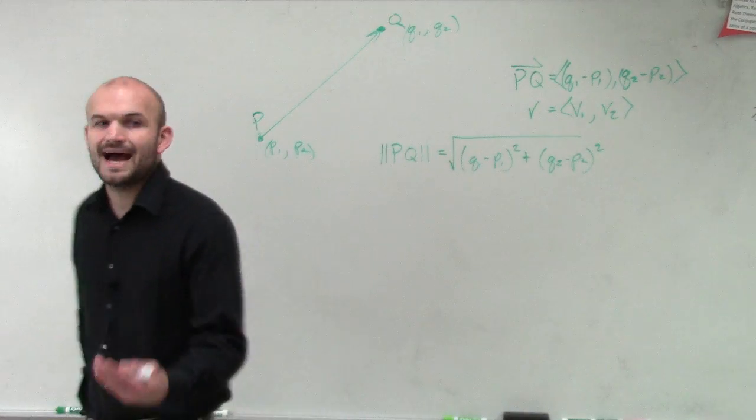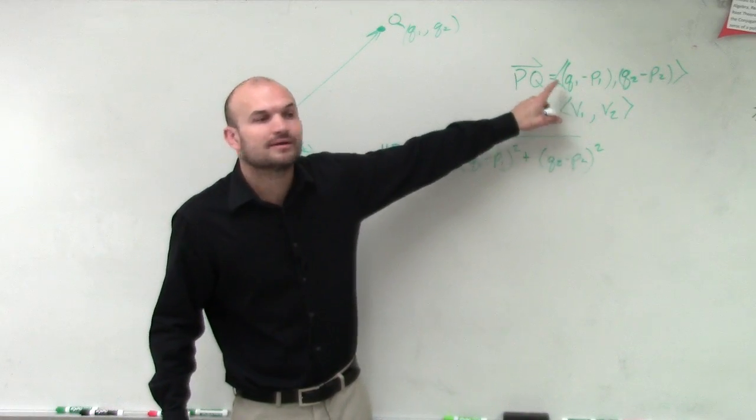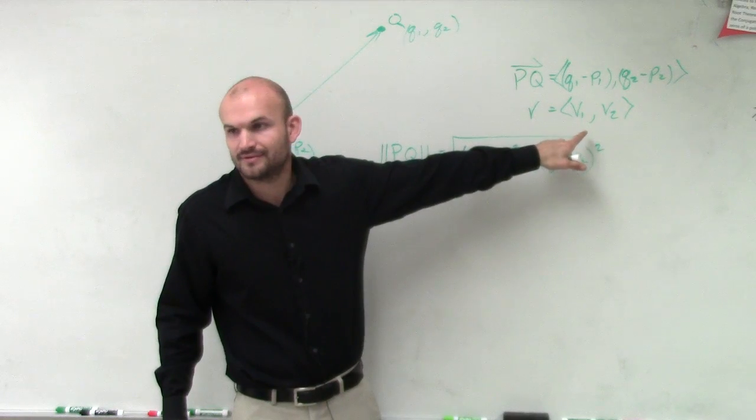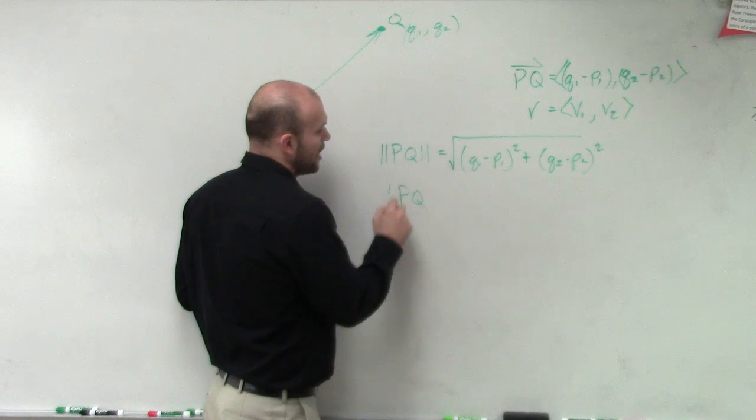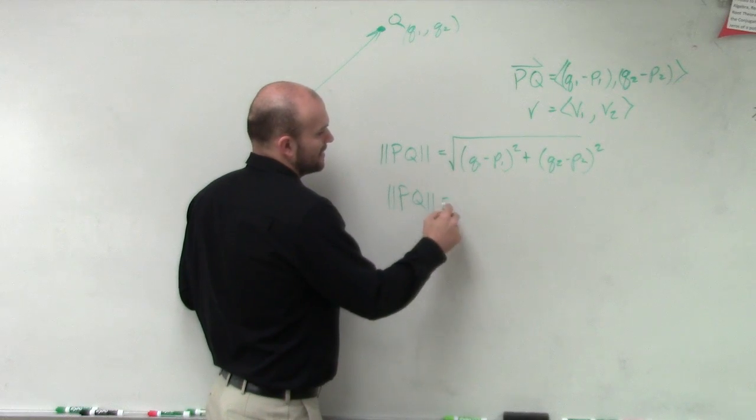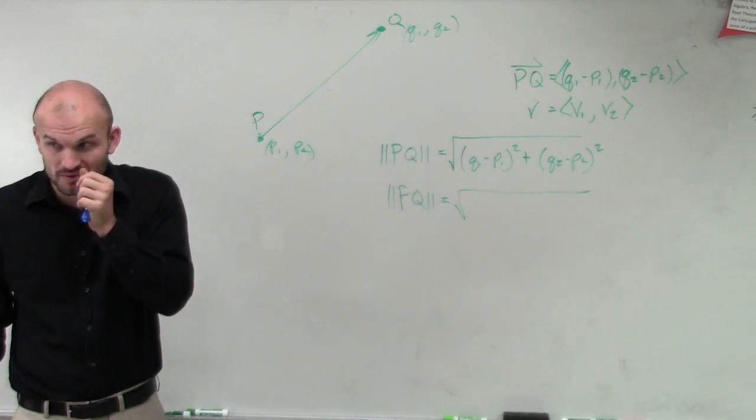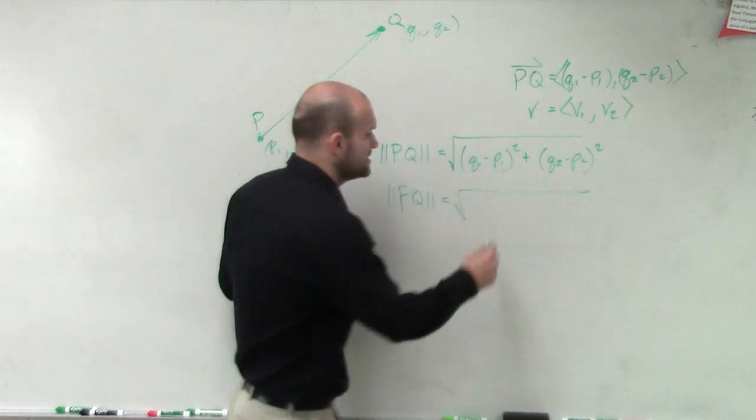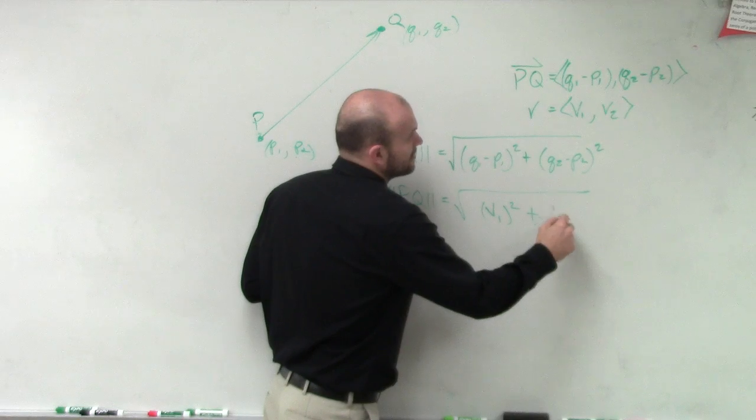Now let's go back to our component form real quick. If you remember, here's how we found component form. Q1 minus P1, that gives you V1. So just a little FYI, if you already have a vector that's in component form, you can simply just write it as V1 squared plus V2 squared.